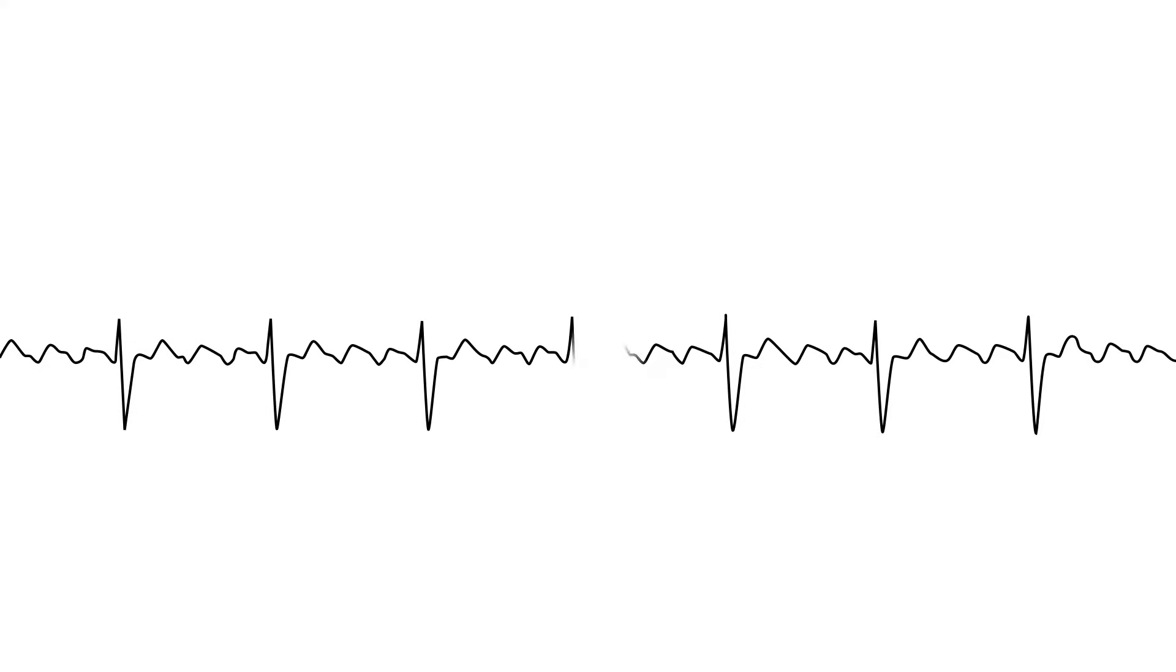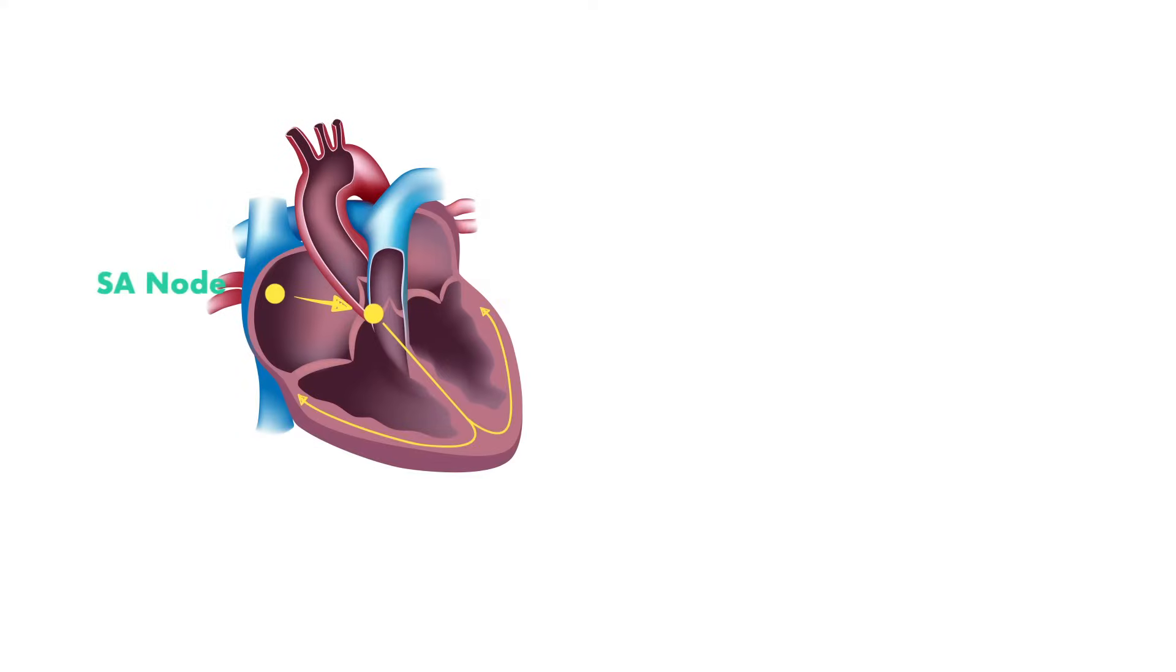Atrial flutter is a rapid atrial rhythm usually caused by re-entry atrial circuits. This means that there is some abnormal focus of electrical activity looping through an abnormal pathway sending electrical activity towards the AV node.